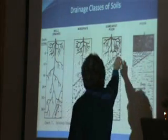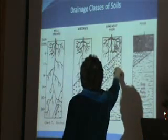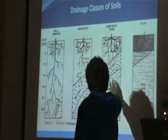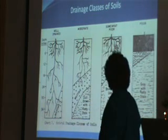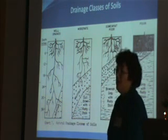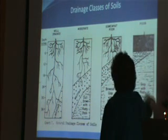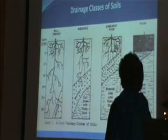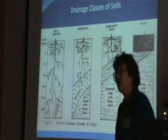Somewhat poorly drained: you might have soil to 12–14 inches, then you start getting into the mottles, and below that a platy structure with grays and rustings on those faces — indicating water present perhaps three to five months of the year. Poorly drained: you might have eight inches of soil on top, hit the mottles, and know you're in really poor soil. If you're seeing mottles at eight inches, that's not where you want to install.